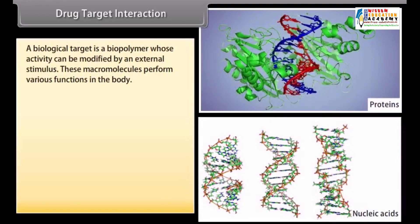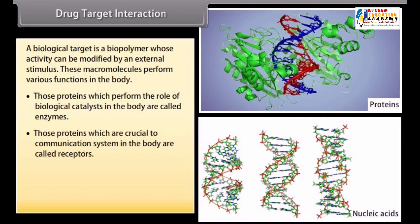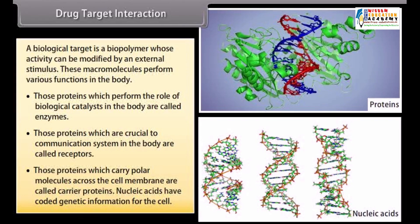A biological target is a biopolymer whose activity can be modified by an external stimulus. These macromolecules perform various functions in the body. Those proteins which perform the role of biological catalysts in the body are called enzymes. Those proteins which are crucial to the communication system in the body are called receptors. Those proteins which carry polar molecules across the cell membrane are called carrier proteins. Nucleic acids have coded genetic information for the cell.